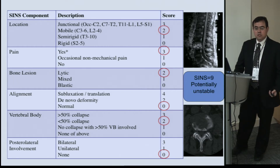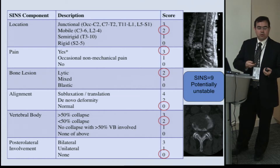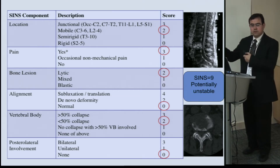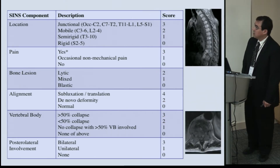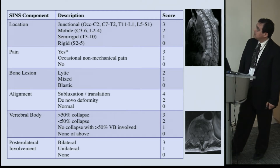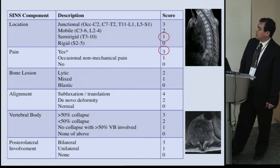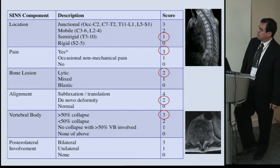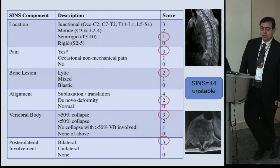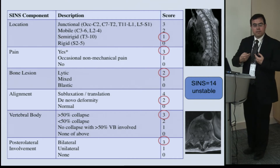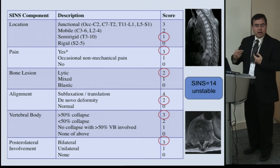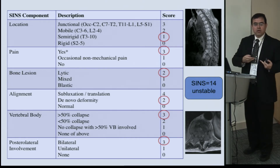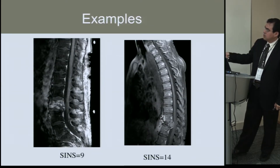This gives a SINS score of nine, which is potentially unstable. That means I can probably not perform surgery on this patient — observe him and move forward with radiation or chemotherapy. In contrast, this other patient with colon cancer at T10 scores one point for the semi-rigid spine, three for significant pain, two for a lytic lesion, two for deformity and collapse, more than 50% vertebral body collapse, and involvement of bilateral posterior elements — giving a SINS score of 14, which is unstable. The score helps facilitate a discussion about the rationale for treatment.